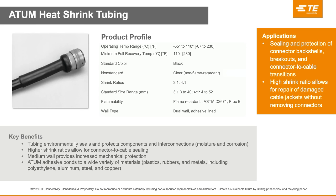Dual wall tubing addresses the need for sealing by providing a lining of adhesive or encapsulant that melts to seal the substrate as you recover the tubing. We offer many types of adhesives to accommodate a wide variety of applications. First up is the ATUM heat shrink tubing — a flame retardant dual wall tubing that environmentally seals and protects from moisture and corrosion. An added bonus is the high shrink ratio, which allows for easier sealing of the connector-to-wire interface and easier repair of damaged cable jackets without removing the connector. The adhesive on the ATUM product is formulated to bond to a wide variety of materials, including plastics, rubbers, and metals.